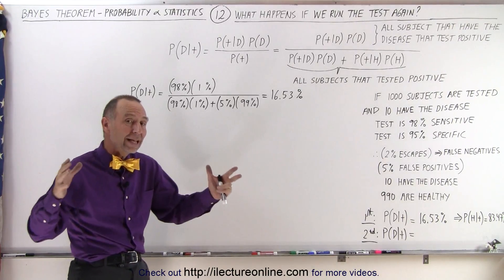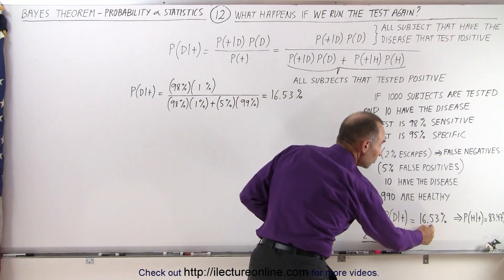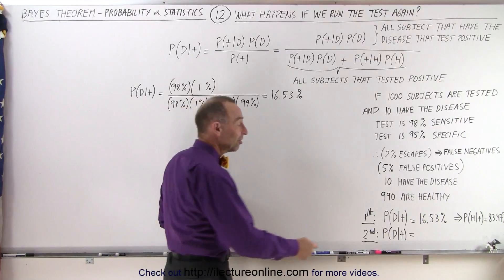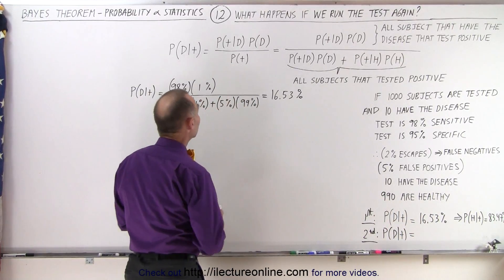But now if we only take those individuals that tested positive, that number now goes up to 16.53%. Of the ones that tested positive, there's a 16.53% probability that they have the condition.